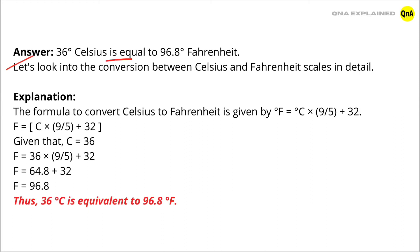36 degrees Celsius in Fahrenheit. The answer is 36 degrees Celsius is equal to 96.8 degrees Fahrenheit. Let us look into the conversion between Celsius and Fahrenheit scales in detail.